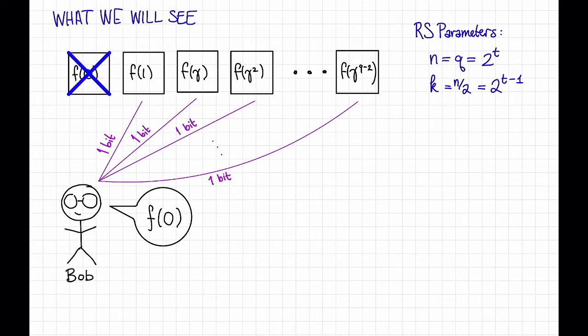Let's imagine that our data is stored using a Reed-Solomon code of block length n, which is equal to q, which is equal to 2 to the t, and dimension k, which is equal to n over 2, which is equal to 2 to the t minus 1. We're going to show the following.